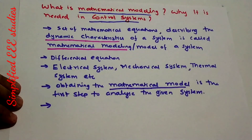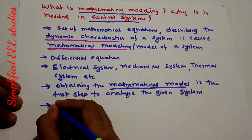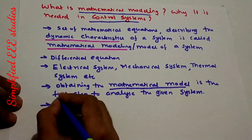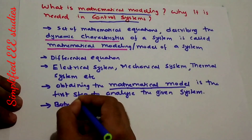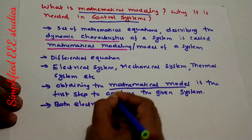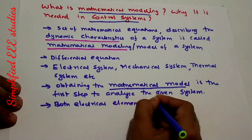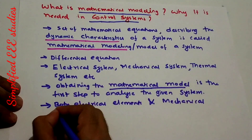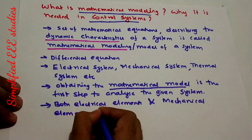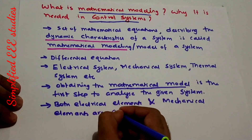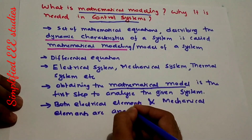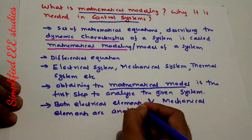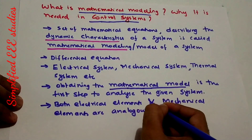If you look at electrical and mechanical elements — in an electrical system, electrical elements will be there; in a mechanical system, there will be mechanical elements. Both electrical elements and mechanical elements are analogous to each other.